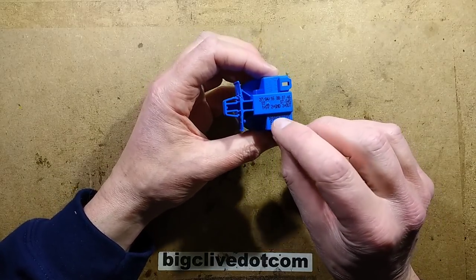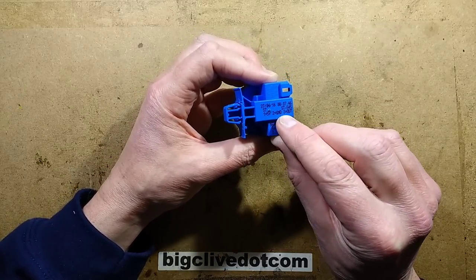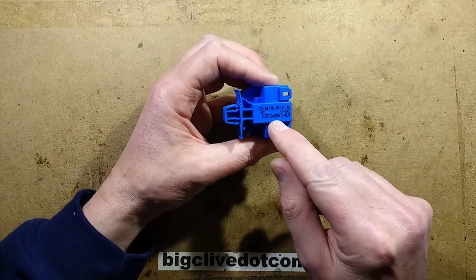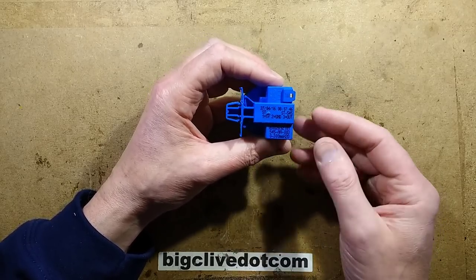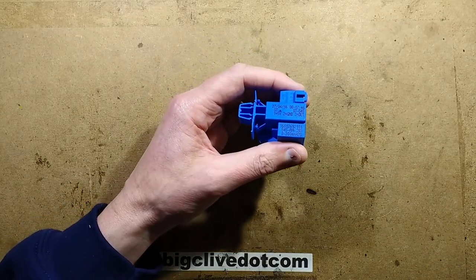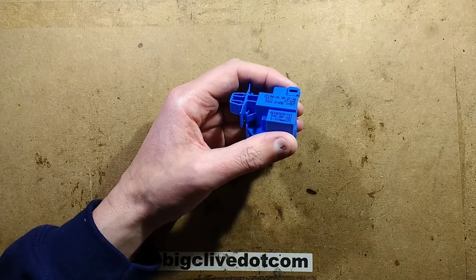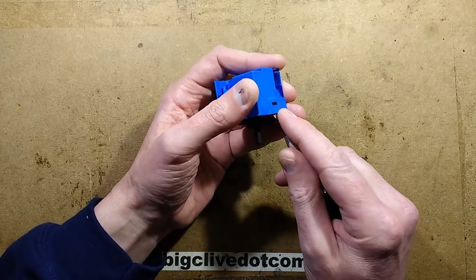I notice on the top it says one 5 volt, two ground, and three out. That's the 5 volt and the ground of the supply, and the three is going to be the output voltage I'm guessing—or pulses. I'm not sure if it's going to be an analogue voltage. I'd guess analogue voltage but I could be wrong.